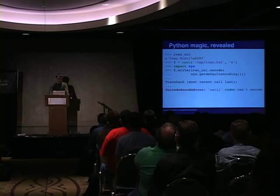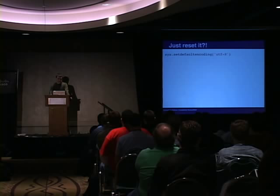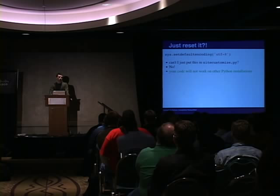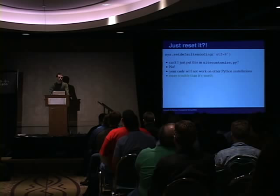The default encoding in Python 2 is ASCII. You might have been told that you can just reset it by putting code in a site-customize module which gets loaded when Python starts. Unfortunately, that's a bad idea. Your code will not work under other Python installations. You might have something working on your machine, but when a new developer loads it up, they'll say it doesn't work on their machine. You'll say it works on mine. It's just more trouble than it's worth — you're going to have to put an FAQ on your site telling users to set this. Just don't do it.